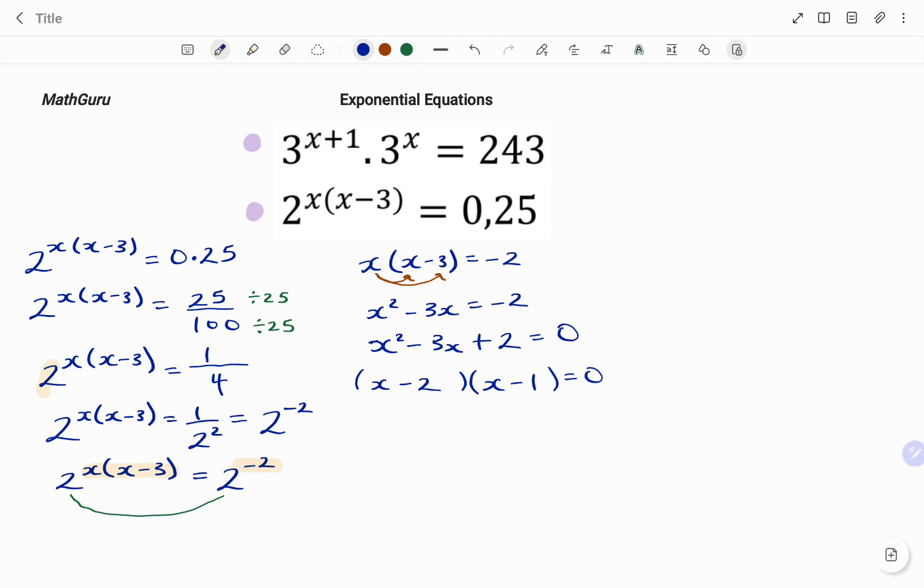So therefore, to find x, I have x minus 2 equals to 0, or x minus 1 equals to 0. So therefore, the value of x equals to positive 2, or value of x equals to positive 1.